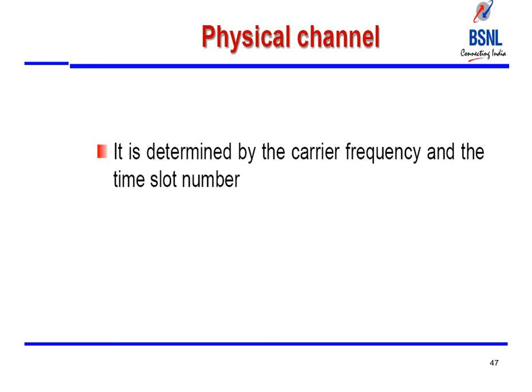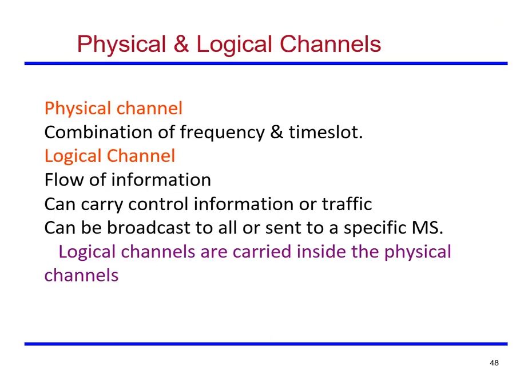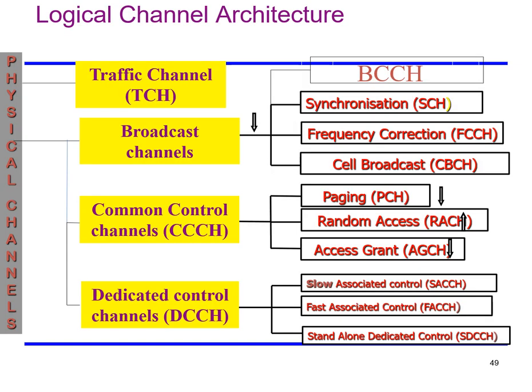In GSM, there are two types of channels: physical channels and logical channels. A physical channel is determined by the carrier frequency and time slot number — a combination of frequency and time slot. A logical channel is a flow of information carrying control or traffic information, and can broadcast to all or send to a specific mobile station. Logical channels are carried inside physical channels and are divided into traffic channels, broadcast channels, common control channels, and dedicated control channels.